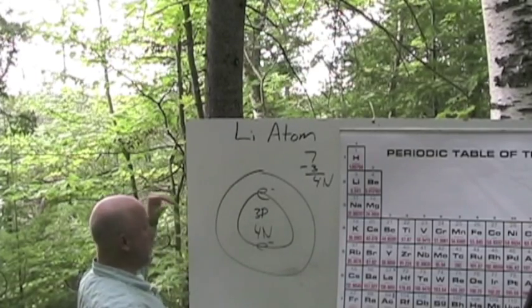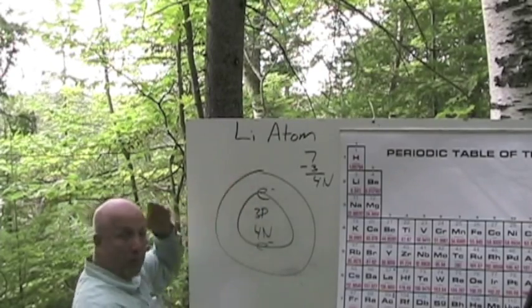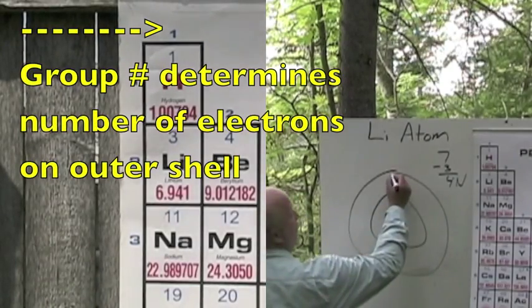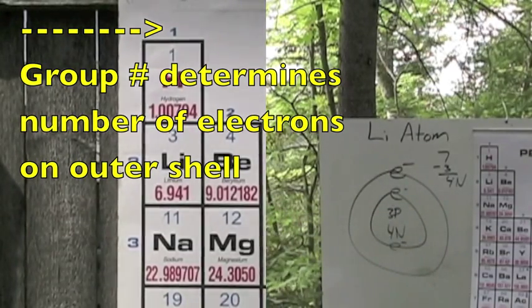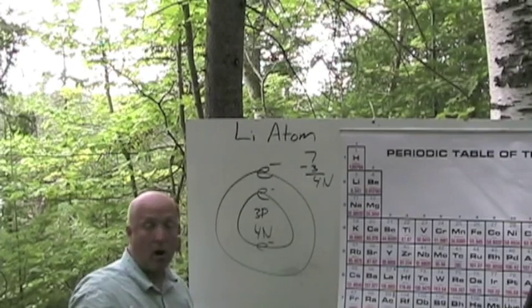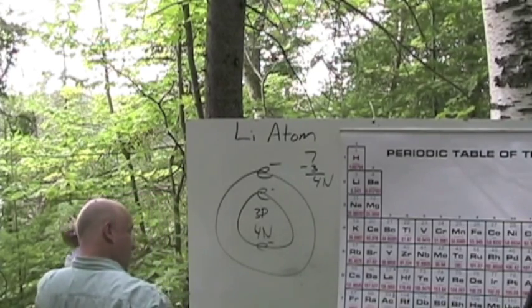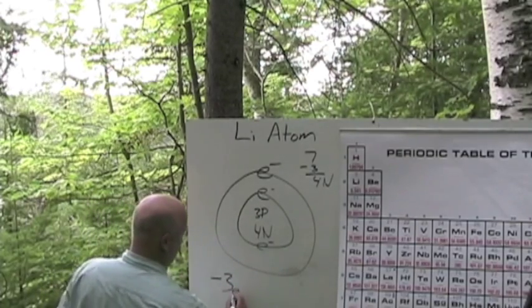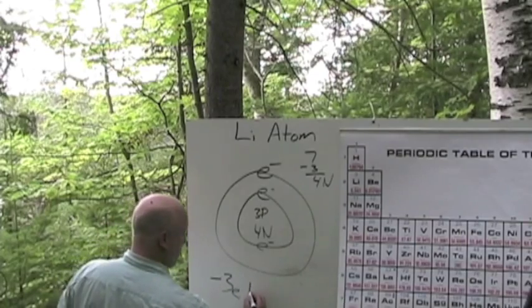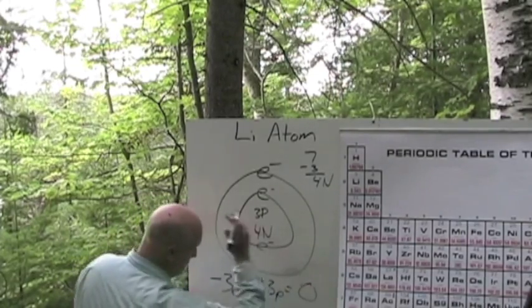So what we got here is 2 electrons on the inner shell, and then we're going to build up to the next shell with 1 electron. Now we have to construct our formula. You'll see here that we have negative 3 electrons plus positive 3 protons equals 0 net charge.